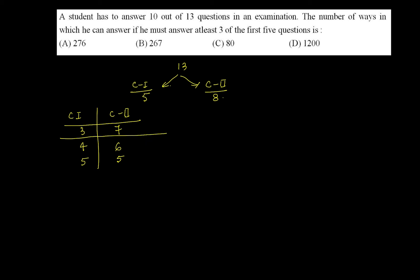So for the corresponding number of ways, here we have available 5 in category 1 and here we have 8 in category 2.